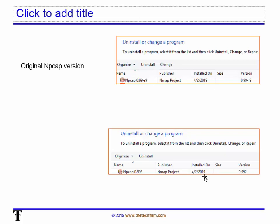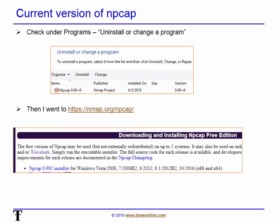That's all I did — went to NP-CAP, got it, replaced it, and everything worked great. Moving forward, I'm not sure how often Wireshark will check for NP-CAP updates, but if you do have any issues capturing or finding your adapters, you might want to reinstall NP-CAP or make sure you have the current version. The URL is https://nmap.org/npcap — or just Google 'NP-CAP' and it'll pop up under nmap.org. Have a good day, bye for now.